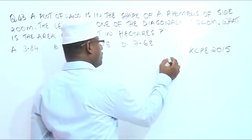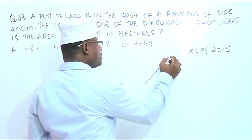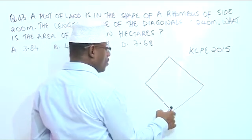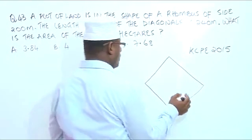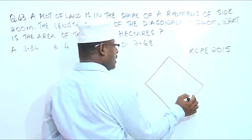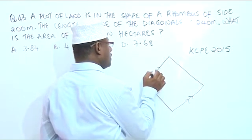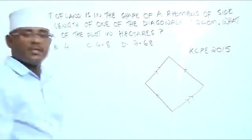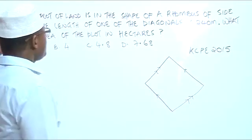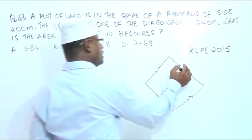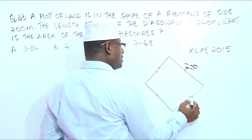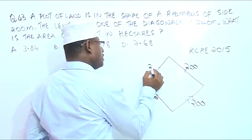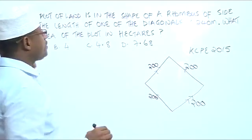So the plot is in the shape of a rhombus. A rhombus has all sides equal, and opposite sides are parallel. So this side is parallel to this side, and this side is parallel to this side. Since the rhombus has a side of 200 meters, all four sides are 200 meters. And the length of one of the diagonals is 240.